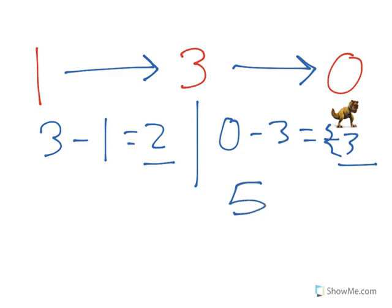How about our displacement? We start off at 1, end up at 0. So, our displacement is negative 1. Which means we traveled one unit in the negative direction.